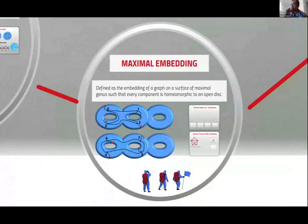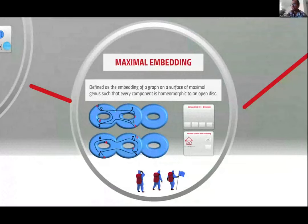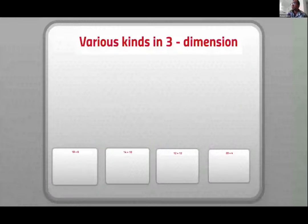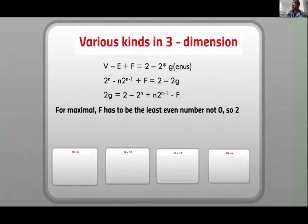Maximal embedding is the embedding of a graph on a surface of maximal genus. Every component is homeomorphic to an open disk, meaning you can't just add handles without there being anything there. We explored different kinds of maximal embedding. For maximal embedding, you have to have the least number of faces, which is theoretically two for QN. It's two because of the adjacent switch theorem which said that the number of faces changes by twos. So if you have even number, the least possible is two.